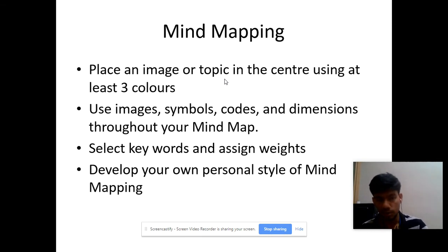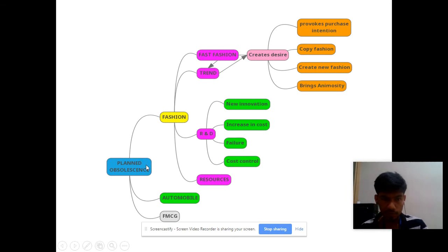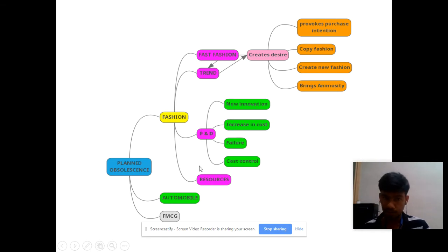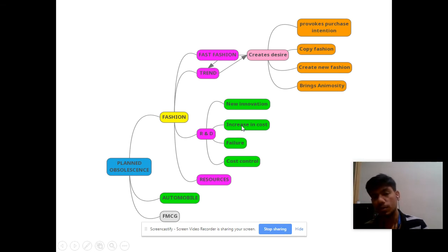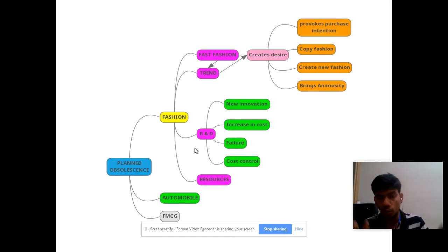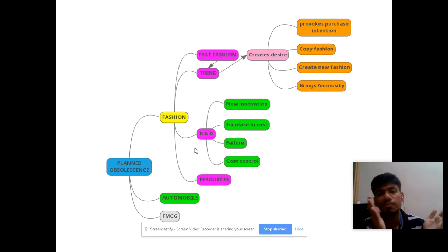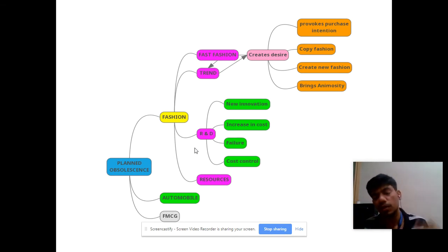This is the mind mapping I've done. Planned obsolescence leads to the fashion industry, automobile industry, and FMCG industry, but I've taken only fashion. Fashion is further divided into fast fashion, trend, R&D, and resources. Under R&D, it leads to new innovation, increases cost sometimes, sometimes becomes a failure, and sometimes even controls cost — these are all sub-areas, and within sub-areas there are further child areas. It's very easy to scope your research work properly this way. Don't explore everything in research, especially for an article; for a PhD thesis you can explore more with different types of factors and variables.